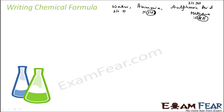Sulfuric acid has two hydrogen, one sulfur, and four oxygen. Methane has one carbon and four hydrogen. We know all this — we know the name and that the compound has these many atoms. So there has to be some way to write it, to understand or represent water in a better form. To do that, we need to understand a concept called valency.